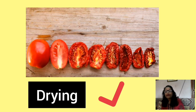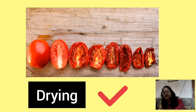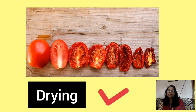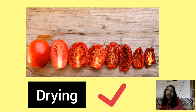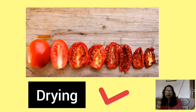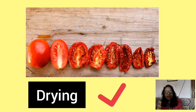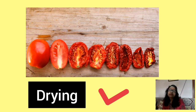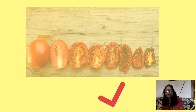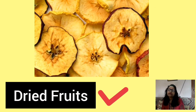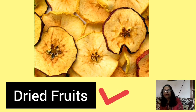Drying is the process by which water content is reduced, preventing and delaying bacterial growth. Drying also reduces weight, making food easier to store. Some common foods preserved by drying are apples, pears, bananas, mangoes, papaya, apricot, and coconut.